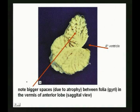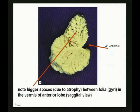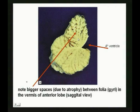The anterior lobe shows atrophy here in the midline — the vermis. The folia, these little gyri and sulci, are atrophying so the spaces get bigger. You can see clear atrophy of the anterior lobe — a pretty classic alcohol problem.